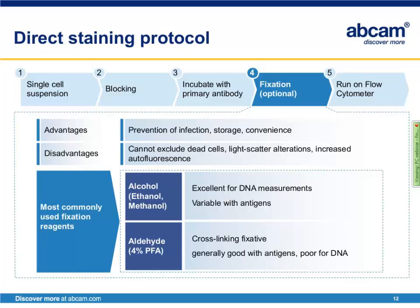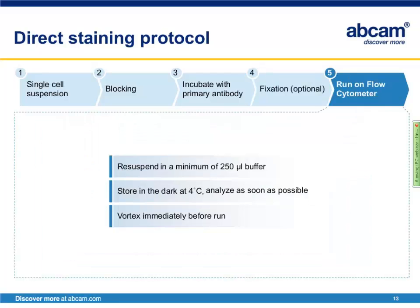If you decide to fix the cells, you can use alcohols such as ethanol or methanol — these work for most protein antigens and are the fixative of choice for DNA measurements. Alternatively, formaldehyde or paraformaldehyde can be used; although a cross-linking fixative, it generally works well with most antigens. Before running the sample on the flow cytometer, it needs to be resuspended in a minimum of 250 microliters of buffer. To avoid fading of the fluorescence, keep the cells in the dark at 4°C and analyze as soon as possible.